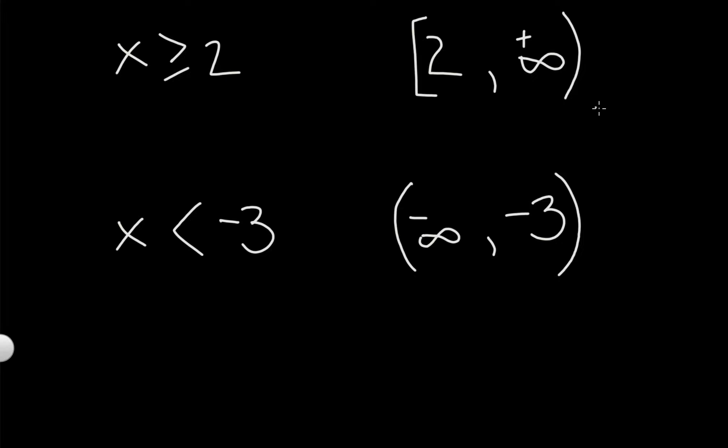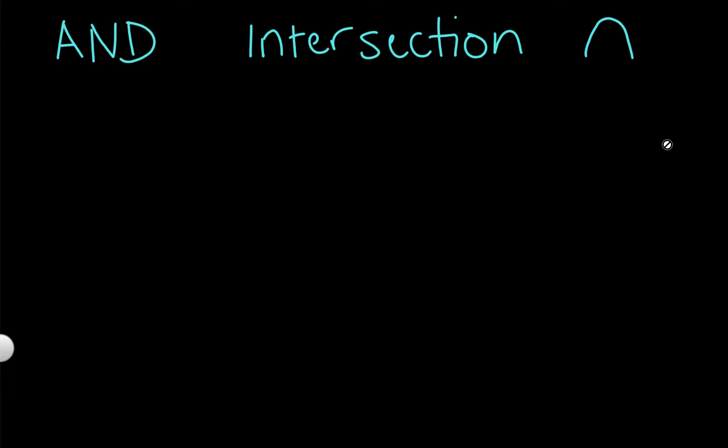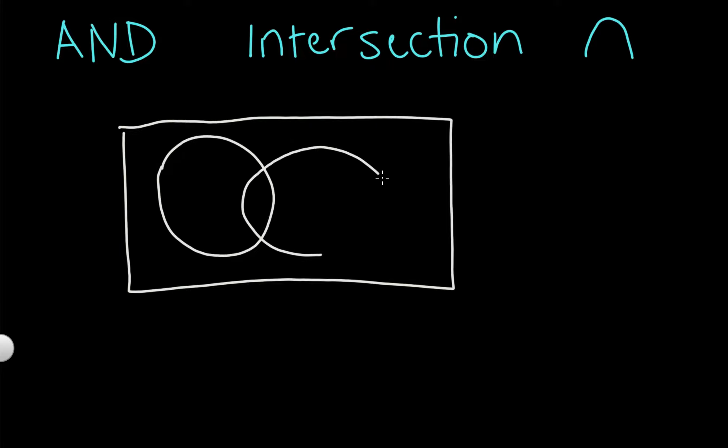Now, the other thing that we talk about when we are looking at sets are ways to combine sets. The first one is an and. This is an intersection, meaning I think this is easiest to look at in a Venn diagram. So if you've got a set A and a set B, the intersection is the area that satisfies both of these. So the members that are in both of the sets is the intersection.